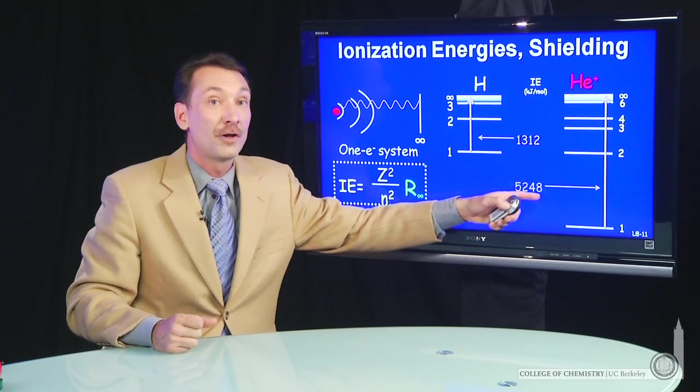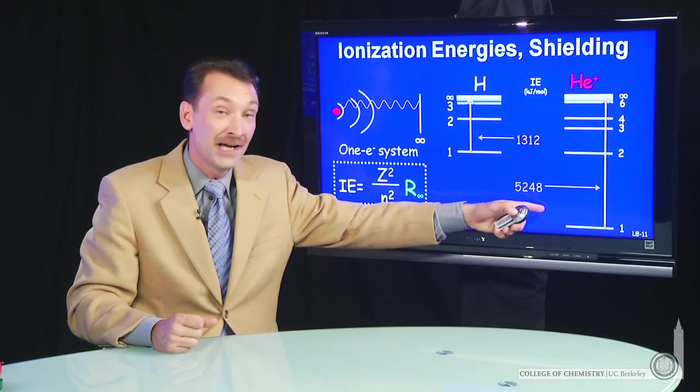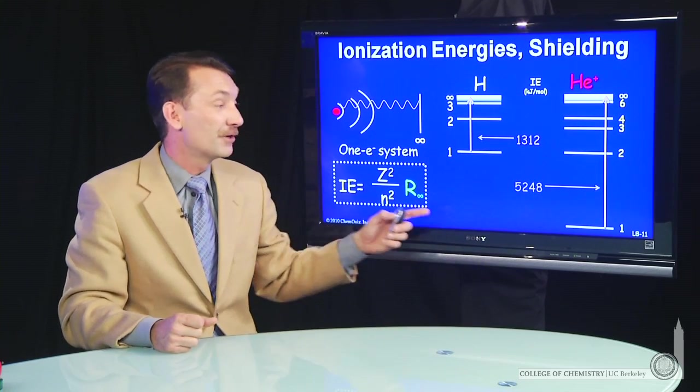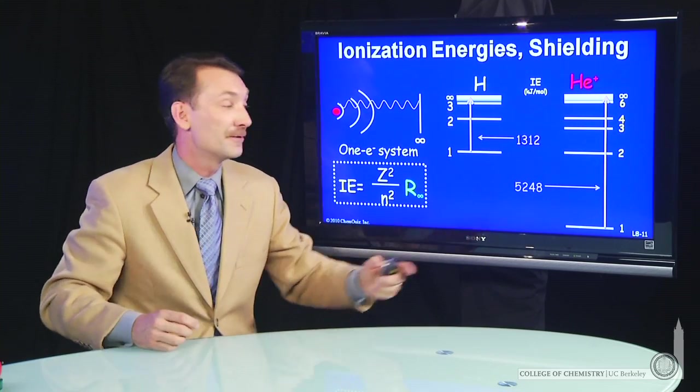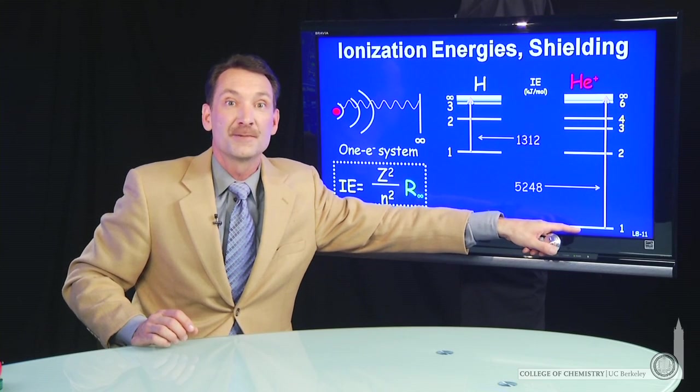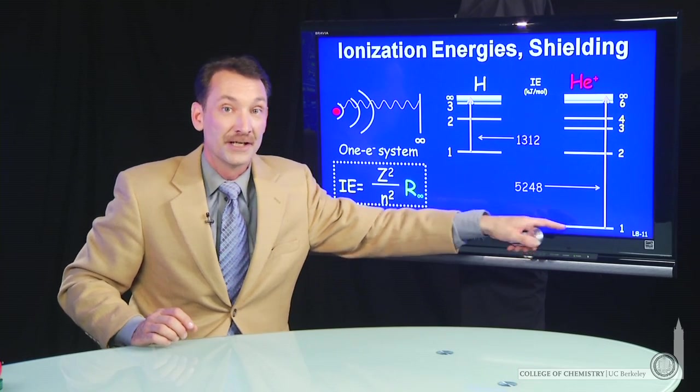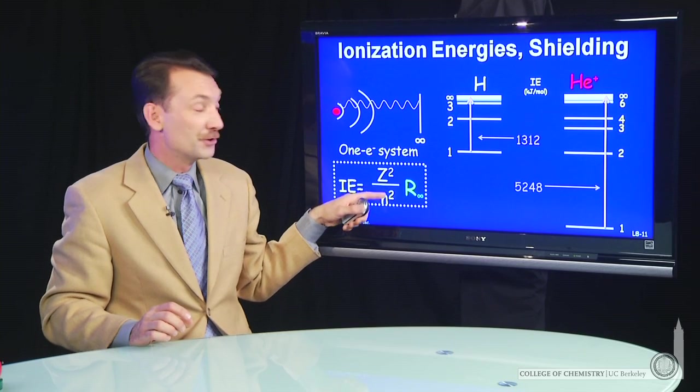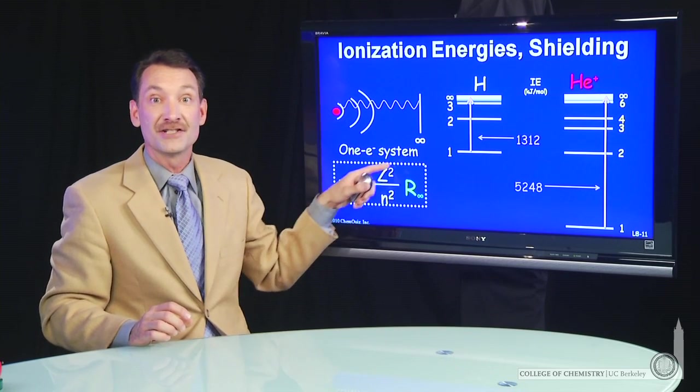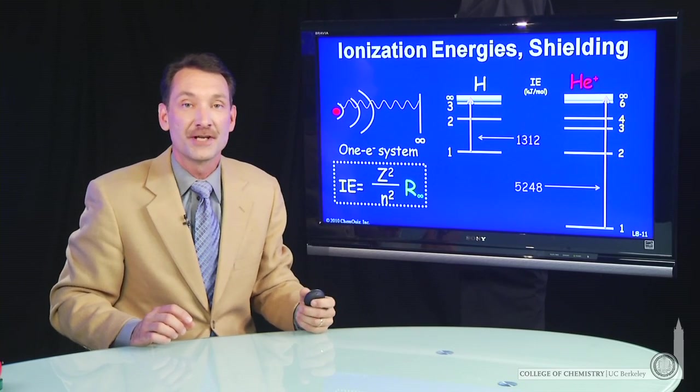To ionize a mole of helium plus ions, four times that. And that's identically four times that. They're one-electron systems. The charge on the nucleus is plus 2 for helium. Plus 2 squared is 4. So you have four times the ionization energy for helium as opposed to hydrogen.